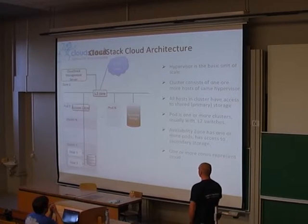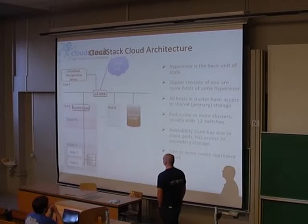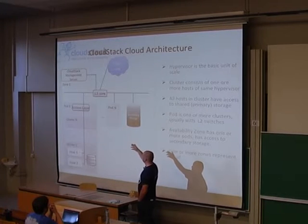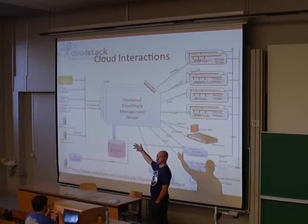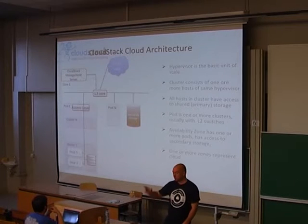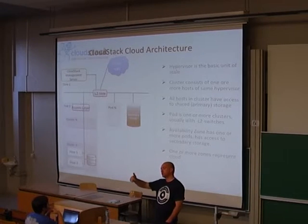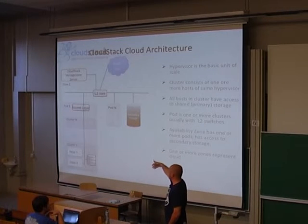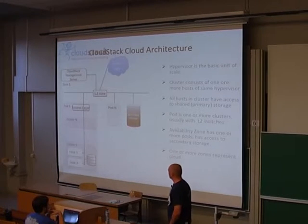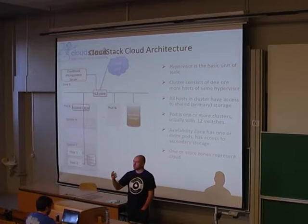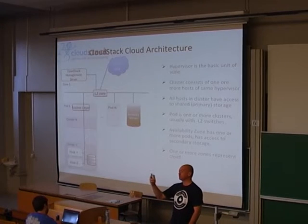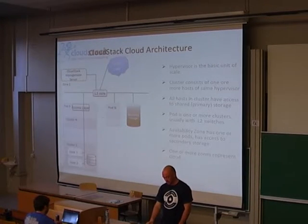CloudStack cloud architecture has a little bit of taxonomy to learn. We have a management server — that's the core, where everything happens. Then we define zones, which are like your availability zones in Amazon. Within zones you define pods, which are racks. Within pods you have clusters, though a cluster may actually span an entire rack. Then you have secondary storage for the image catalog and primary storage. On a cluster basis you can actually mix hypervisors within a single rack — you could have VMware, KVM, and Xen on the same rack, with different storage associated with each.